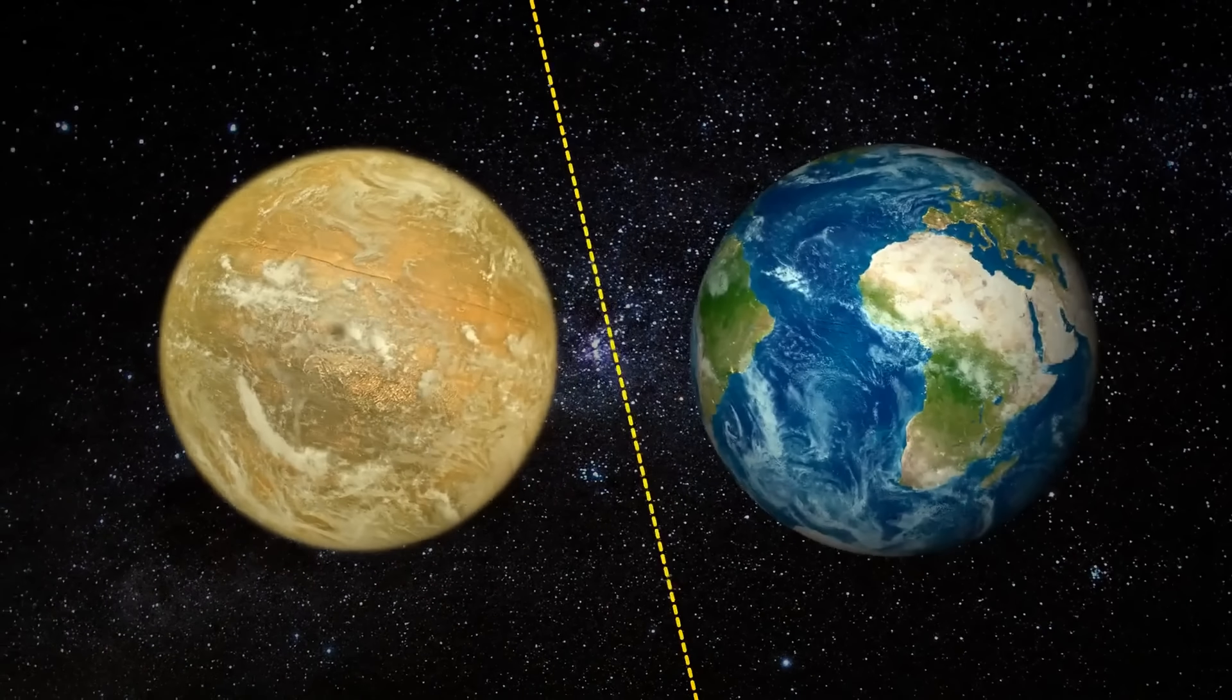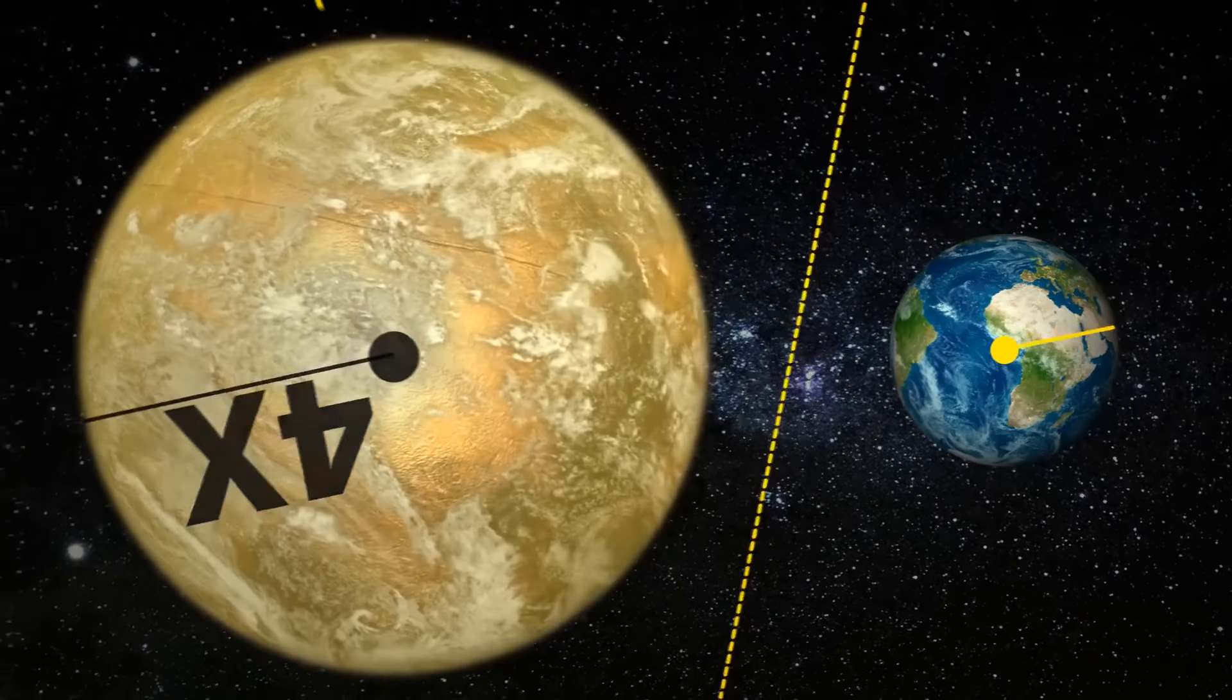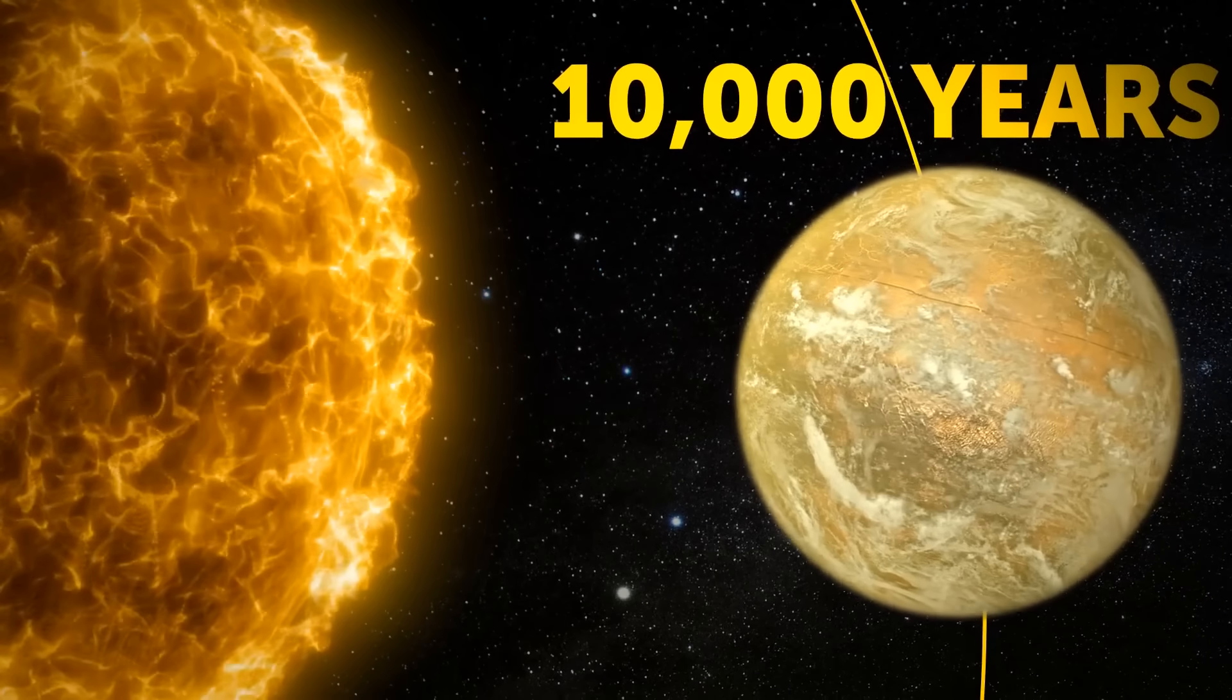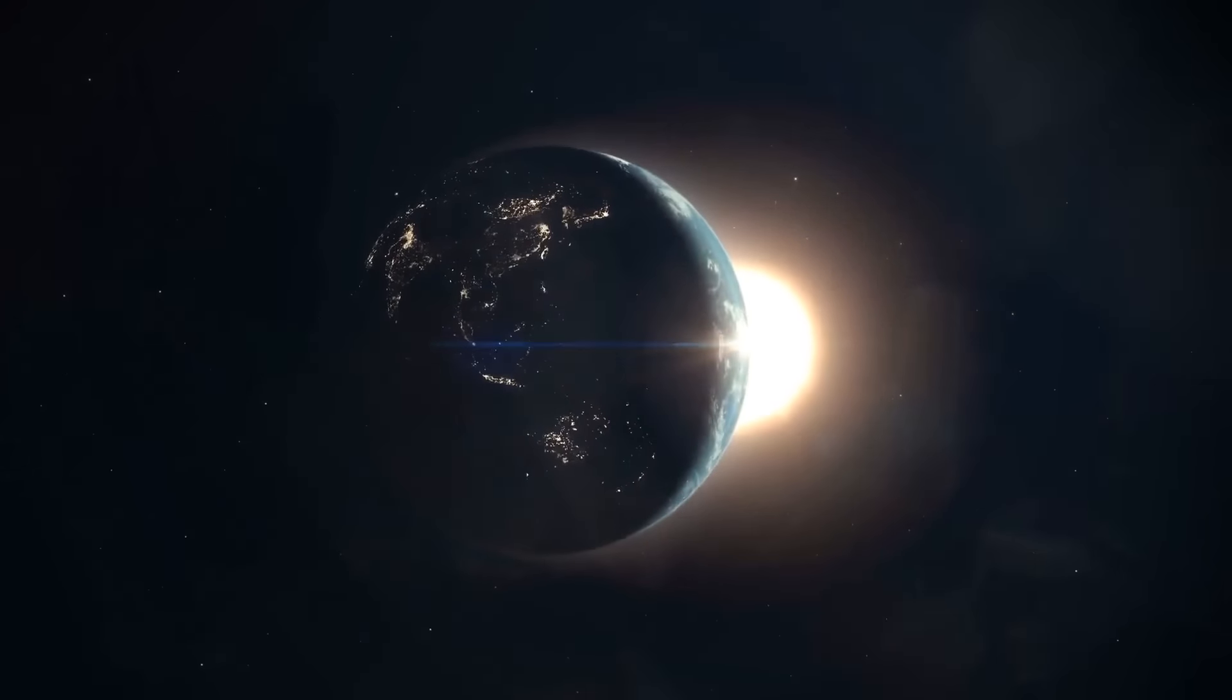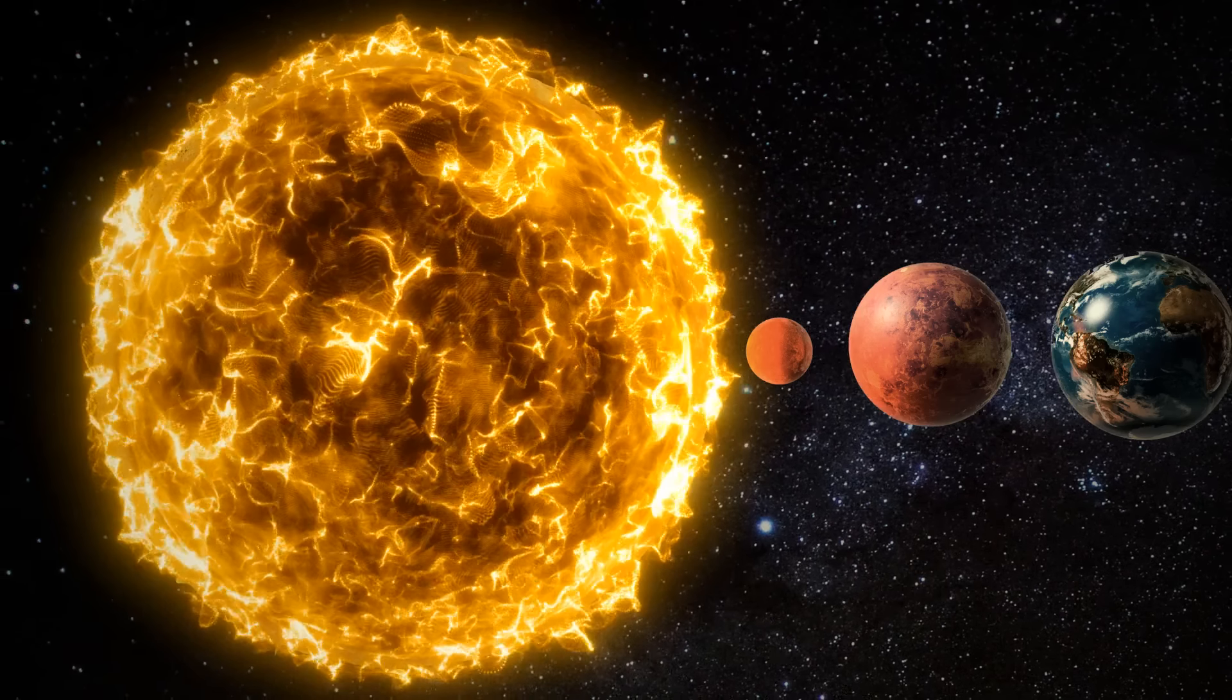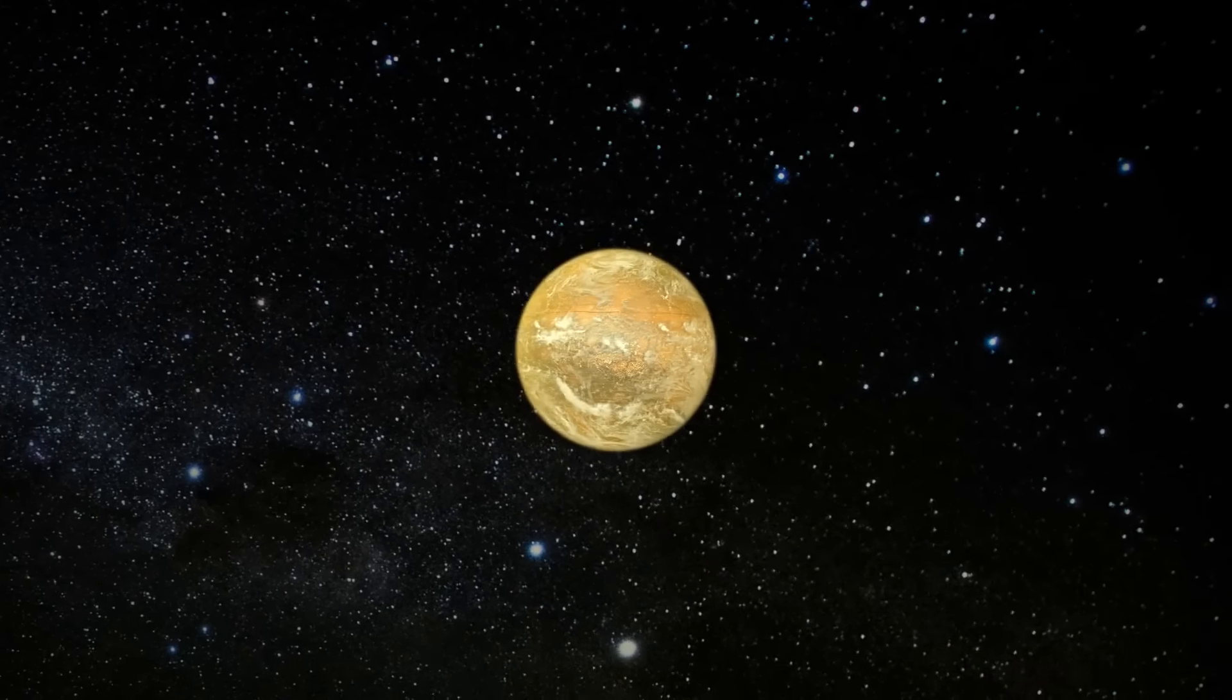Planet X, if it exists, is 10 times the size of Earth and 4 times its radius. It would take at least 10,000 years for the planet to orbit the Sun, and it would sit over 200 times further out than our home planet. That's 600 astronomical units from the center of the solar system.